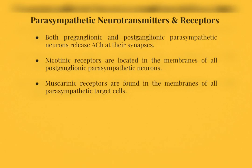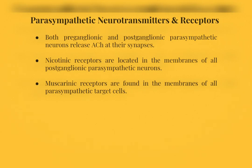Let's talk about neurotransmitters and receptors in the parasympathetic division. Preganglionic and postganglionic parasympathetic neurons both release acetylcholine at their synapses, leading to an excitatory effect. There are two types of cholinergic receptors: nicotinic receptors located in the membranes of all postganglionic parasympathetic neurons, and muscarinic receptors found in the membranes of parasympathetic target cells.